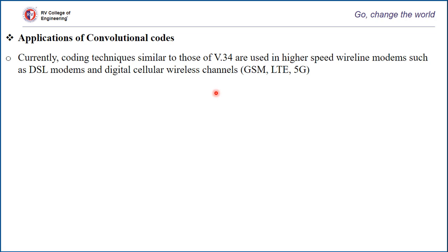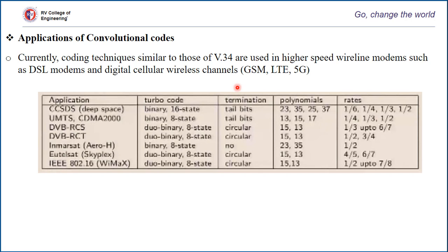GSM, 3G, LTE, and 5G use convolution codes. In particular, GSM uses a convolution code of memory 4 and rate half. There are numerous applications of turbo codes in recent standards ranging from digital video broadcasting to third-generation wireless standards to deep space exploration and satellite communication. Binary turbo codes essentially use rate K/N greater than 1, with additional bits added in some cases for termination of the encoder.